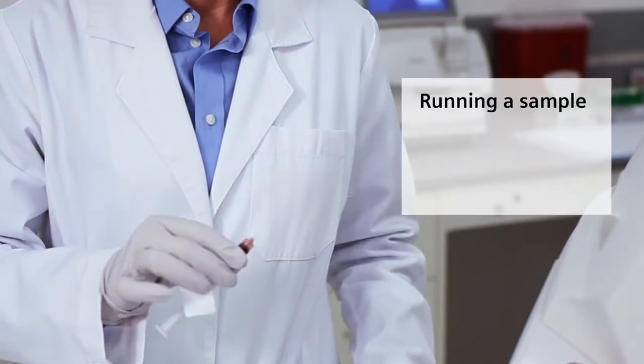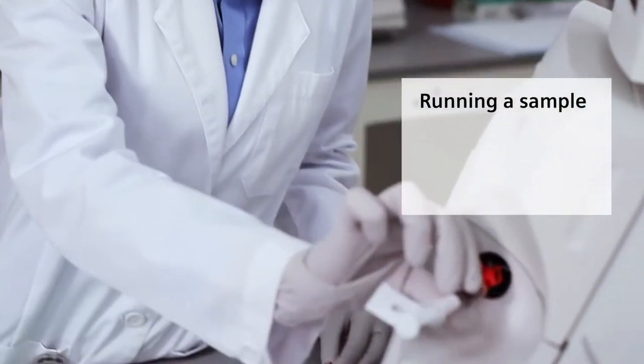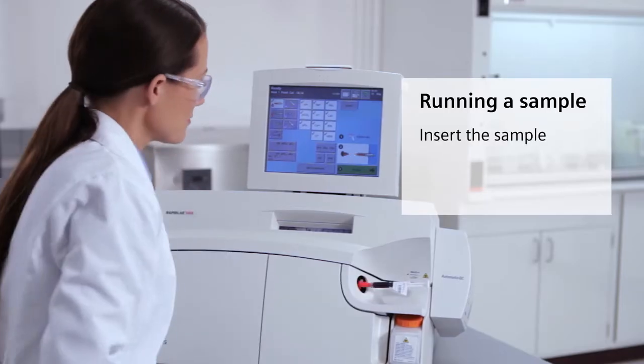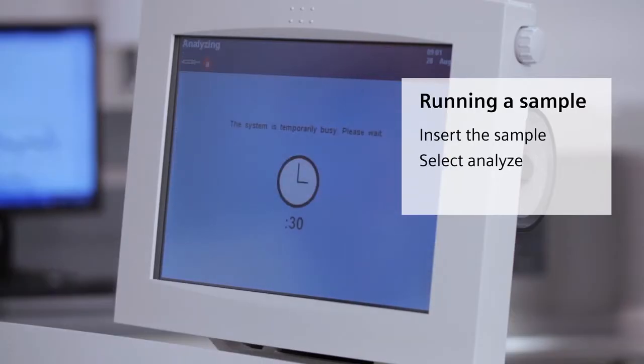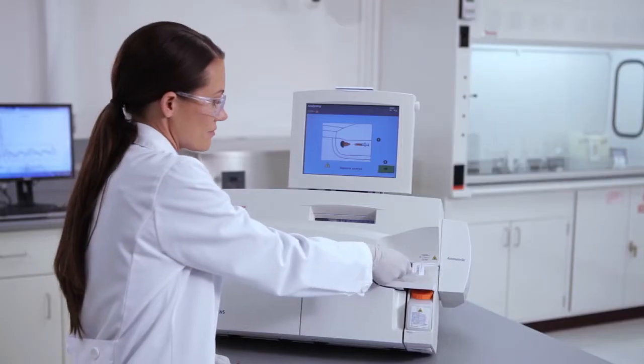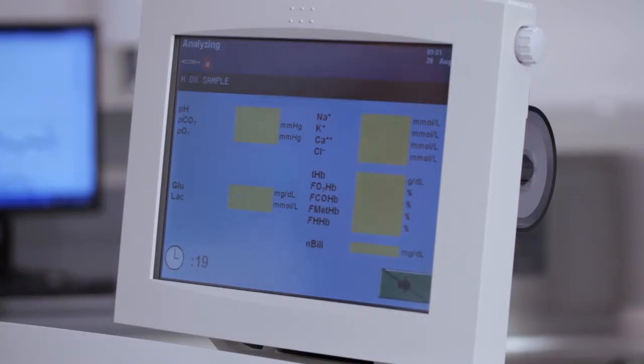Running a sample on the RapidLab 1200 system is easy. Simply insert your sample, select Analyze, and remove the sample. In three steps and just 60 seconds later, the patient's sample is analyzed and results are available.